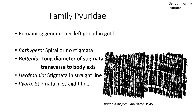The remaining four common genera in the Pyuridae have the left gonad inside of the gut loop, so we need another characteristic to differentiate between Bathypera, Boltenia, Herdmania, and Pyura. Bathypera has spiral stigmata, or in some cases no stigmata at all. So if you see a Pyuridae genus with the left gonad in the gut loop and spiral stigmata or no stigmata, you have genus Bathypera.